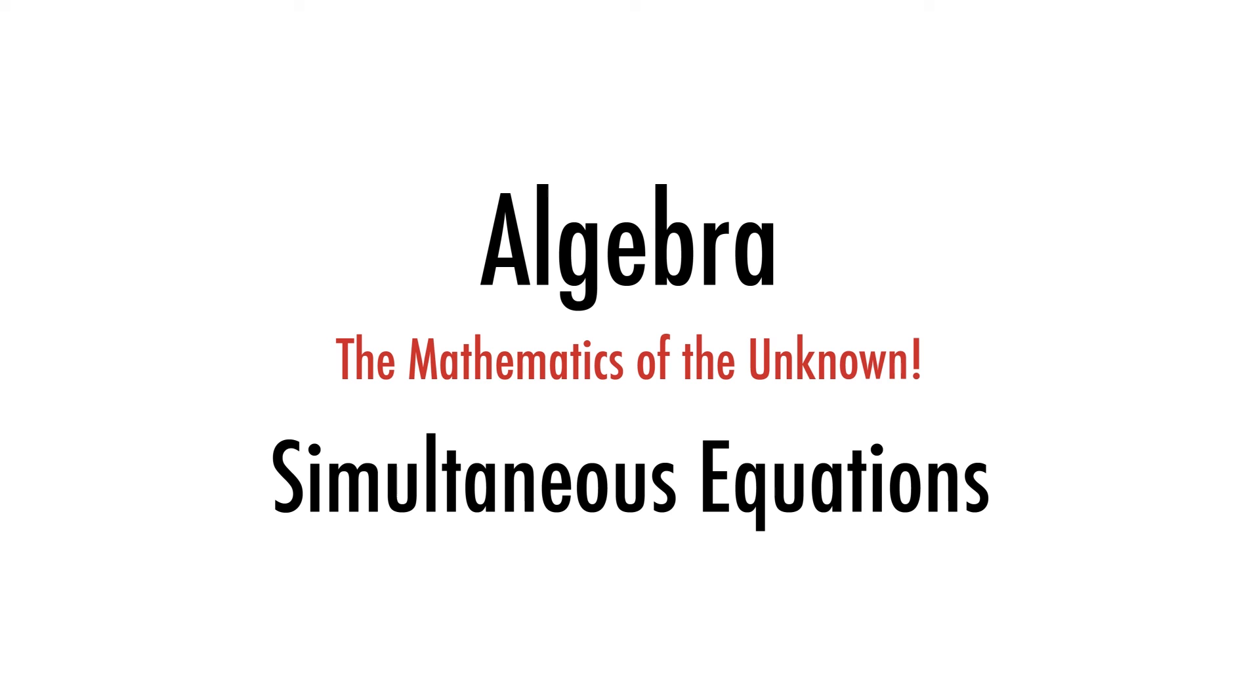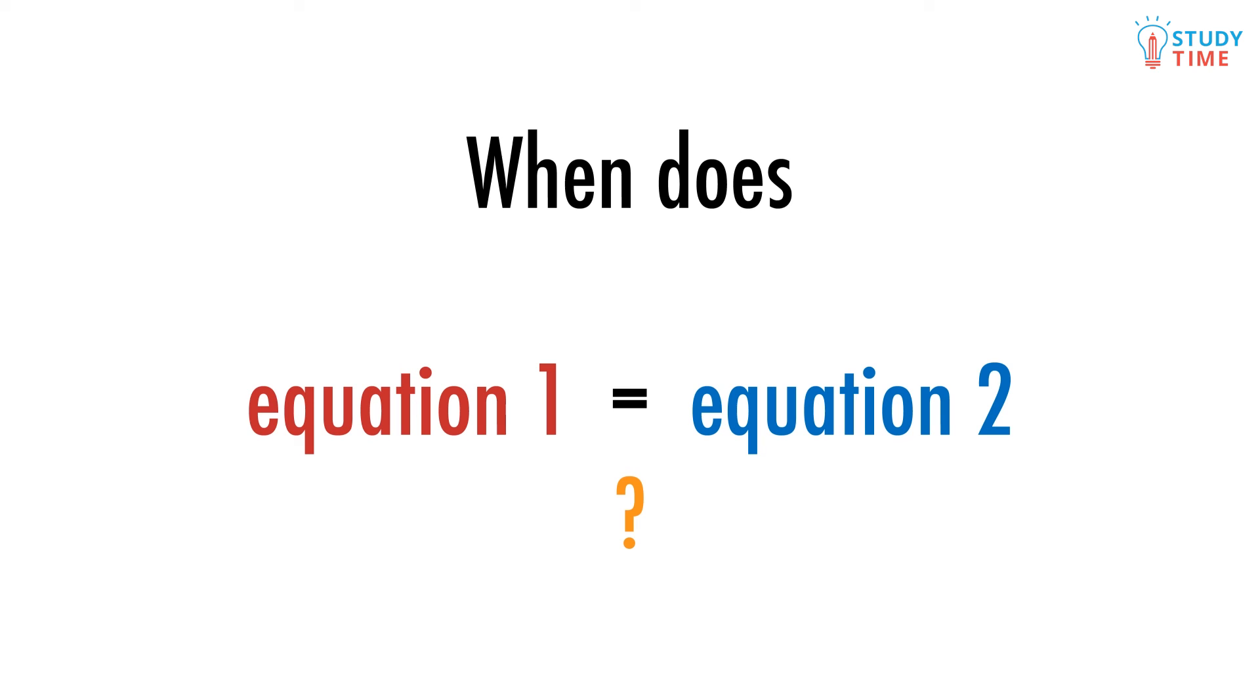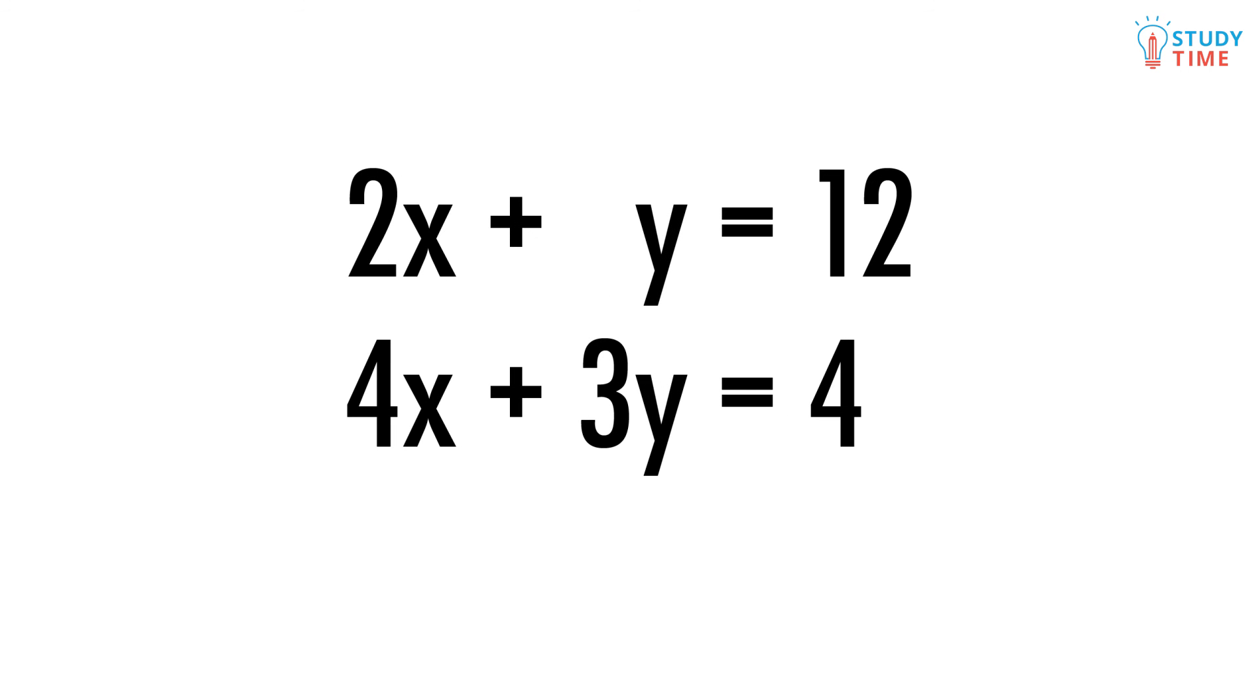Sometimes in algebra you're given two equations at the same time. It can be useful, especially when plotting graphs, to find out at what value of x and y both of the equations are true together. With graphs we can use this to find out where two lines intersect or cross over. Let's look at these two equations. There are two ways we can find out at what x and y values both of these equations are true.